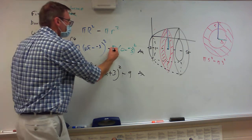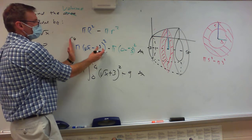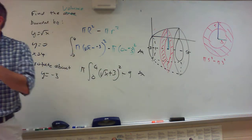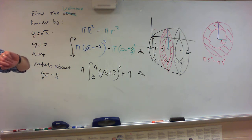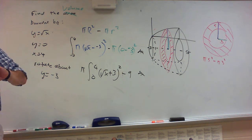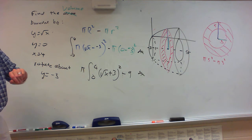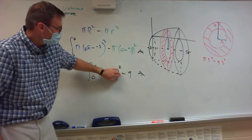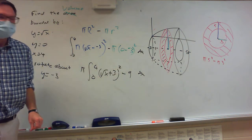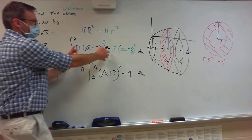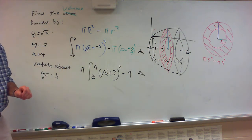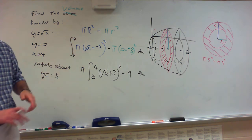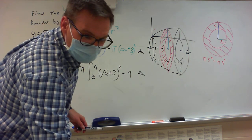That's a minus sign — because you're subtracting. Big circle minus little circle. I just didn't erase very well. Does this kind of make sense?